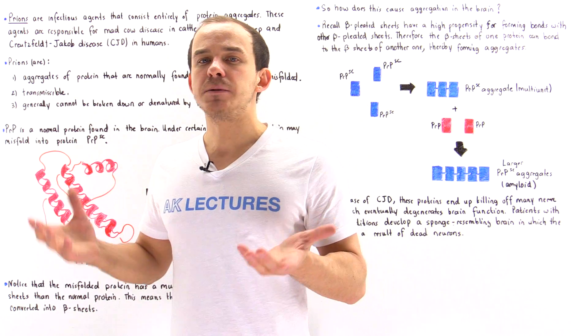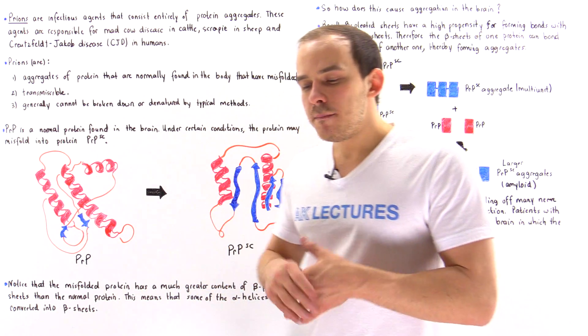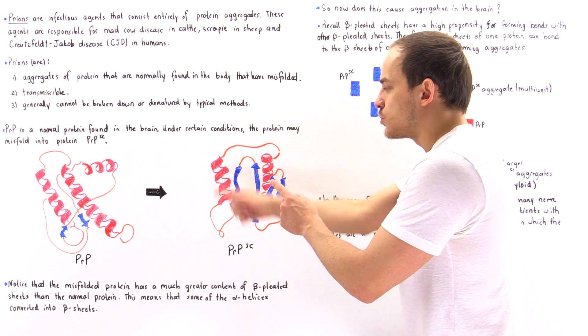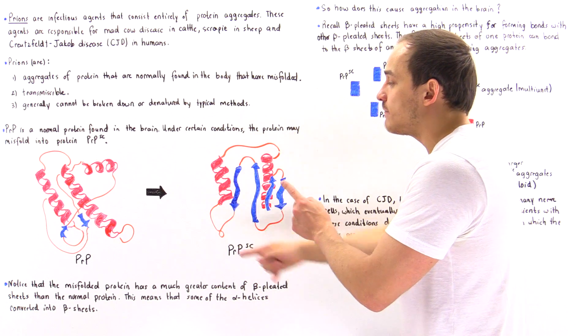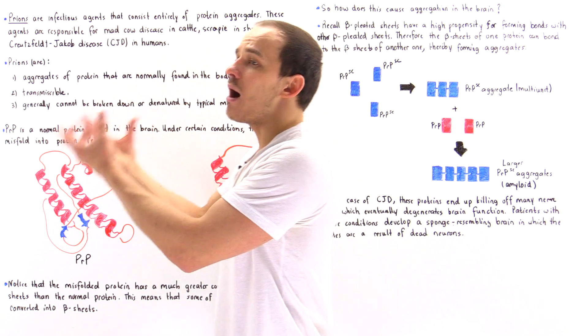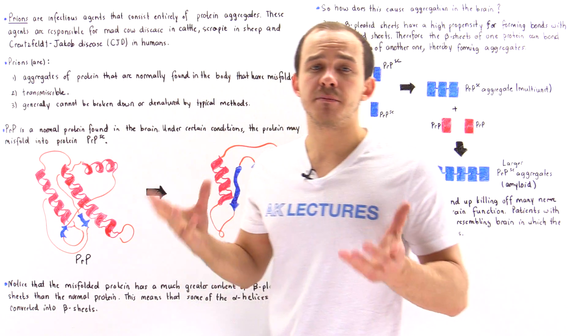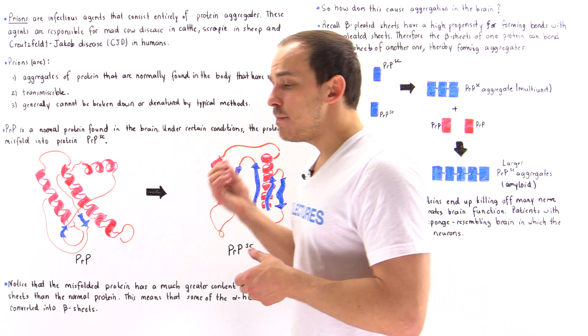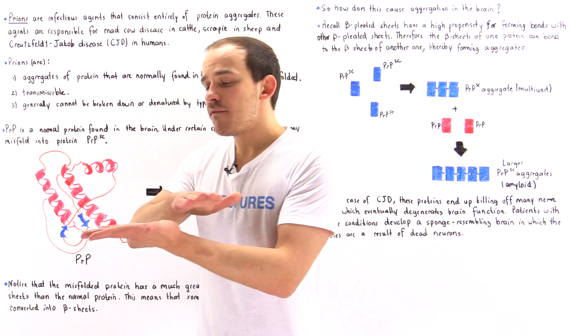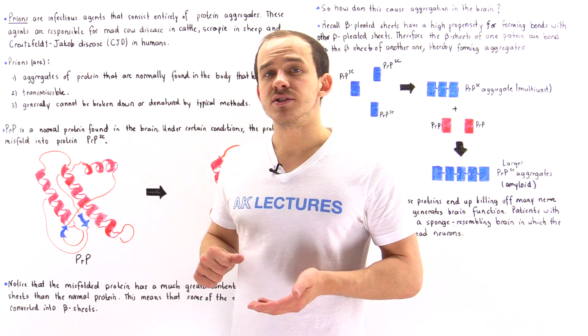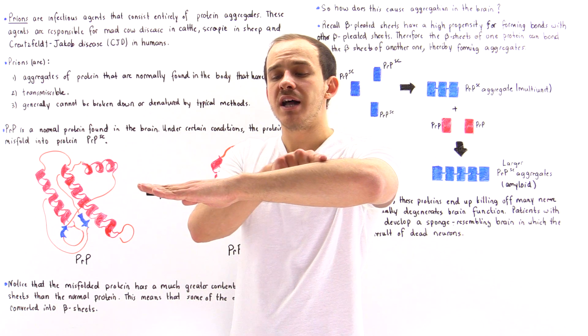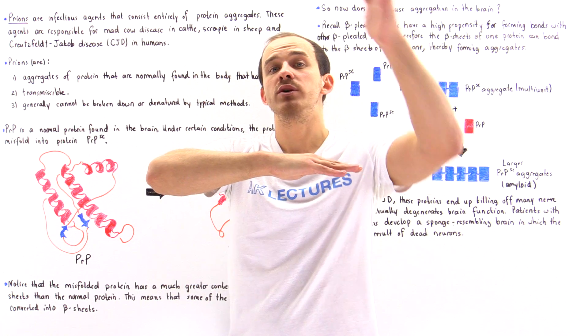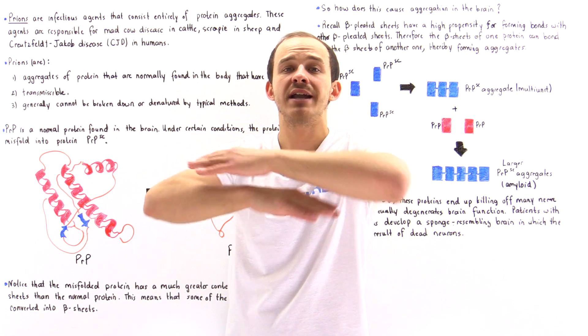What's the big deal about beta pleated sheets? Because we have a high content of beta pleated sheets, these molecules will have a high propensity for binding to other molecules that also contain beta pleated sheets. The structure of the beta pleated sheet consists of linear polymers of amino acids—one linear polymer, a second stacked on top, a third stacked on top of that, and so forth.